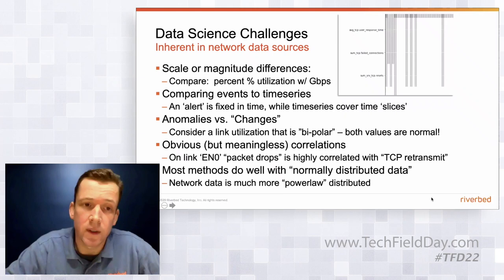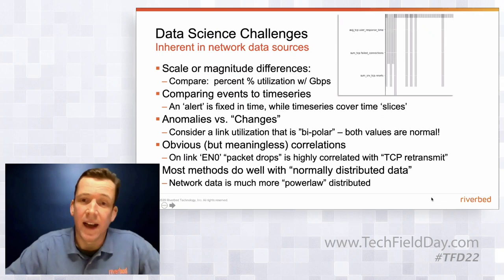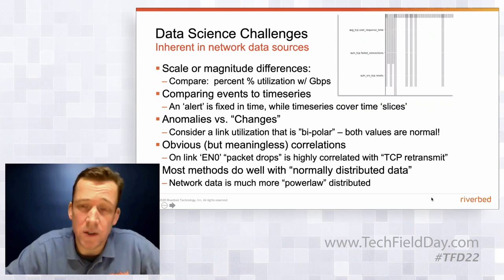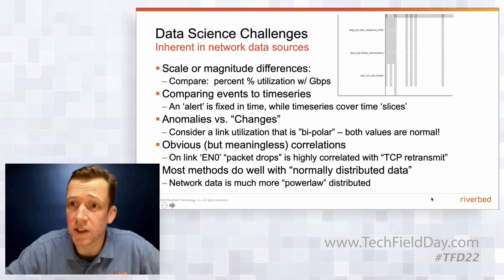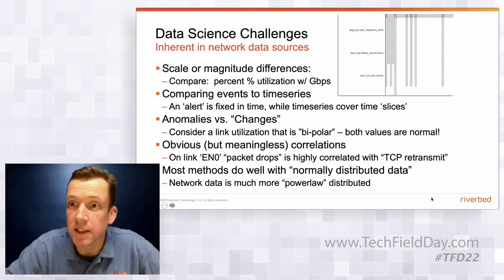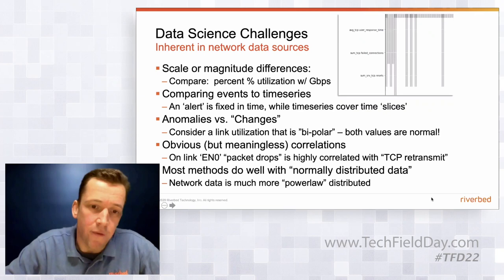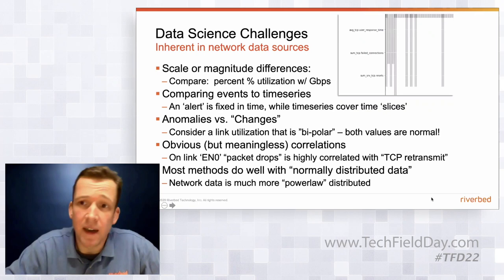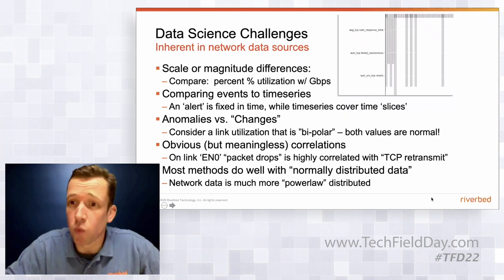There's the distinction between anomalies and state changes. And there's a big problem with spurious correlation — my data scientists came back saying we're strongly correlating retransmissions with packet drops. That's not helpful; that's just how TCP works. A lot of domain wisdom has to go in before this becomes useful. Finally, data on networks is typically power-law distributed, meaning most techniques work well on bell-curve-distributed data, and you don't see many bell curves in computer networks.